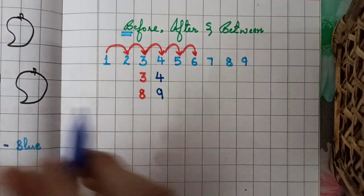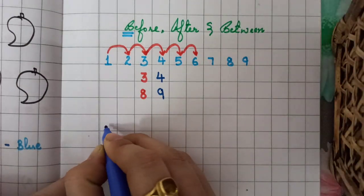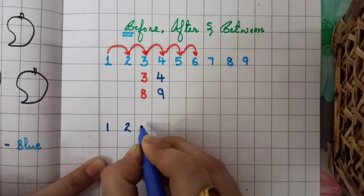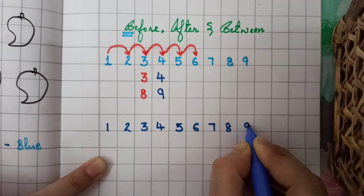Now, before. In before as I told them, as I have told you that you have to tell them that it is a backward counting, like this is 1, 2, 3, 4, 5, 6, 7, 8, 9.